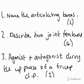Finally, I'm going to leave you with a quick test — there are three questions. First of all, name the articulating bones of the shoulder joint. Secondly, describe two joint features of the shoulder joint — it's a describe question, so you can't just name them; you need to describe what those features do. And finally, state the agonist and antagonist during the up phase of a tricep dip. Good luck with that — I'll give you the answers in a moment. If you don't want the answers immediately, then press pause.